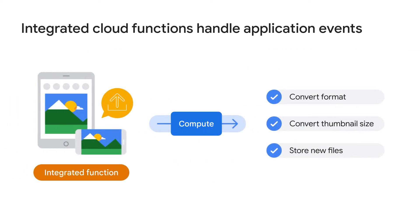Many applications contain event-driven parts. For example, maybe you have an application that lets users upload images. When that event takes place, the image might need to be processed in a few different ways, like converting the image to a standard format, converting a thumbnail into different sizes, and storing each new file in a repository. You could integrate this function into your application, but then you'd have to provide compute resources for it, whether it happens once a millisecond or once a day.